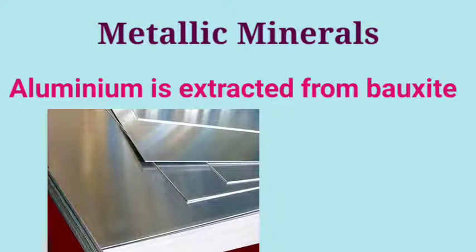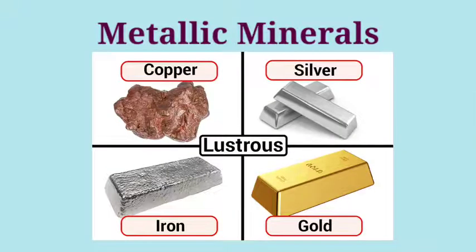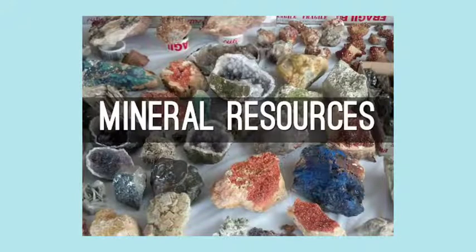Aluminium is extracted from bauxite and is used to make aeroplanes, utensils, and other household items. Metals like copper, silver, gold, iron, and a few others are also found in India. That's all for today — read the chapter and study well. Thank you.